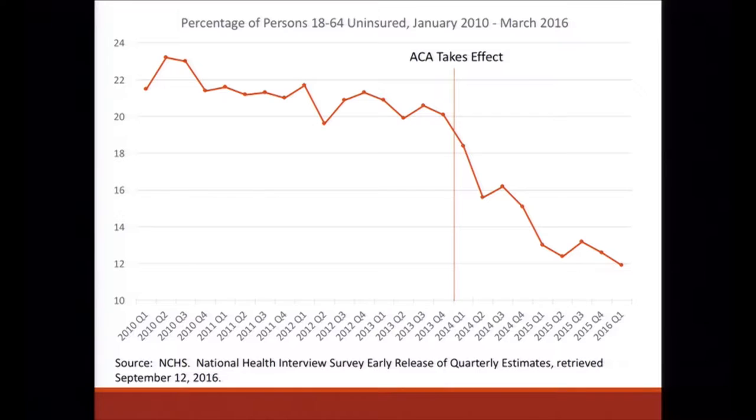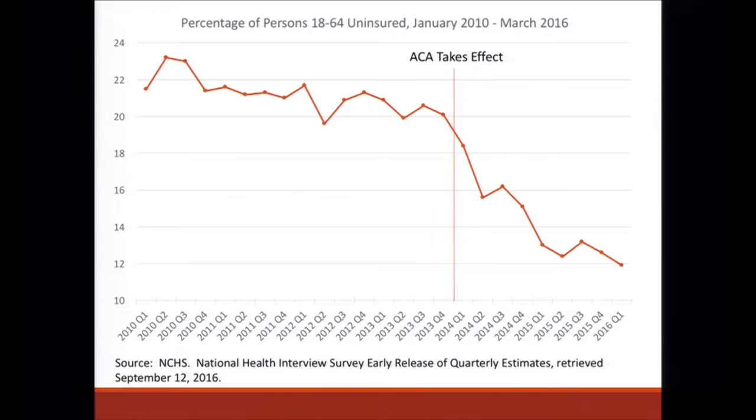This figure shows the percentage of people uninsured between ages 18 and 64 over a six-year period from January 2010 to March 2016. There's a red vertical line marking when the ACA took effect, and a pretty clear pattern that the uninsurance rate dropped dramatically right when the ACA was implemented. However, this could reflect other factors such as improvements in the economy and faster job growth, and it also masks a lot of heterogeneity across places.